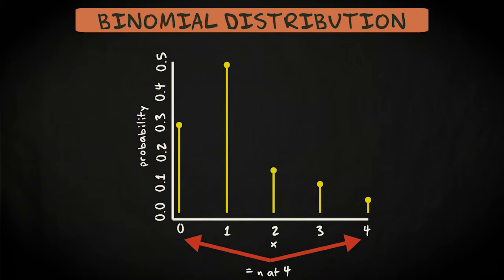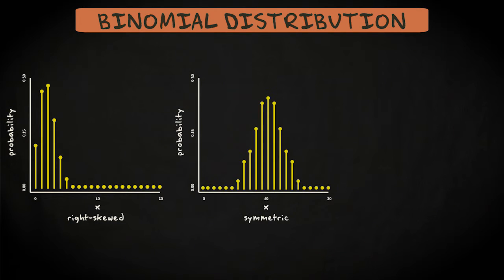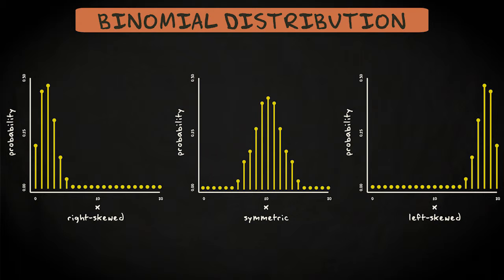Interestingly, the shape of the binomial distribution can change considerably for variations of the parameter p, the probability of success. Depending on this parameter, the distribution can vary between right skewed to symmetric and to left skewed. These three distributions show the numbers of successes in 20 trials for different probabilities of success. For the first, the probability of success is 0.1, for the second it's 0.5, and for the third it's 0.9.